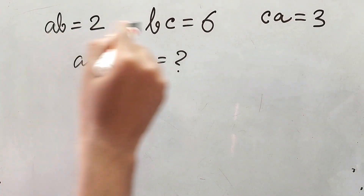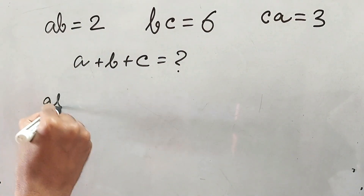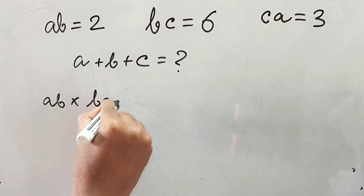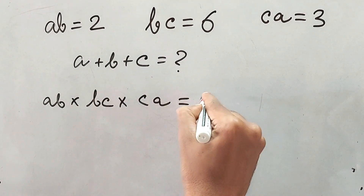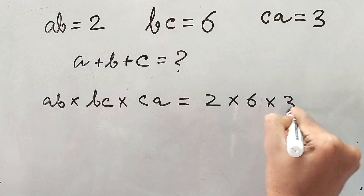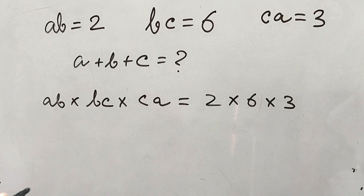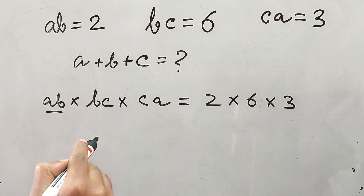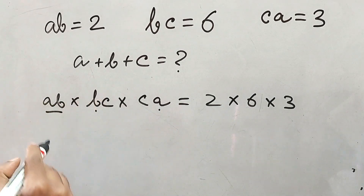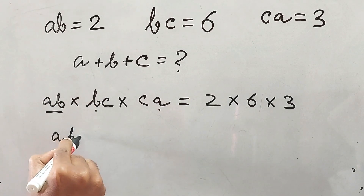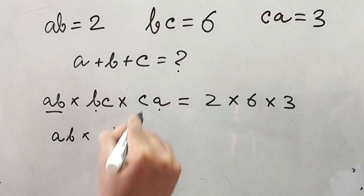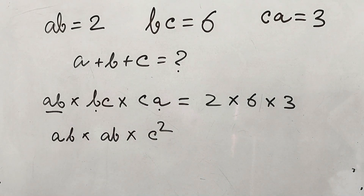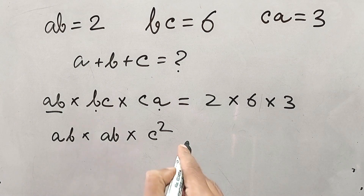Well, there is a better idea. You just multiply all these things — AB into BC into CA, which is equal to 2 into 6 into 3. Now, simply separate in your way, not in their way. Take AB from here and AB from these two, so you get AB squared into C squared.